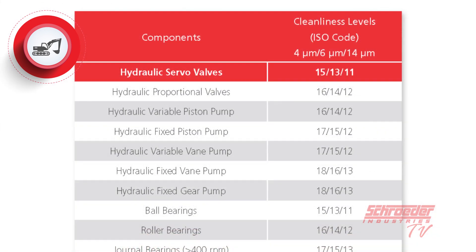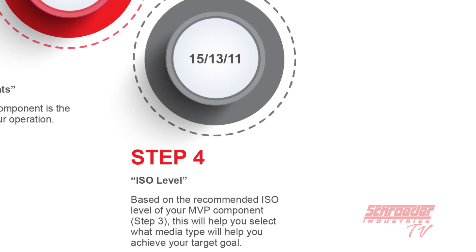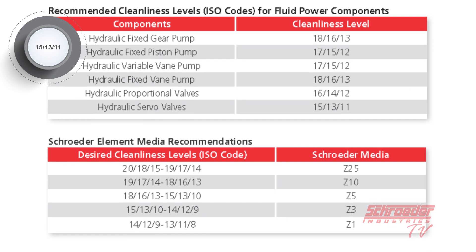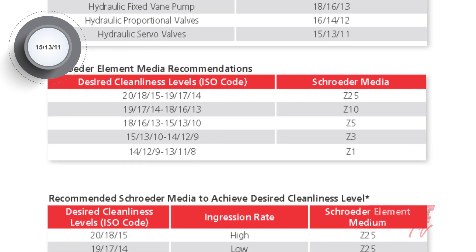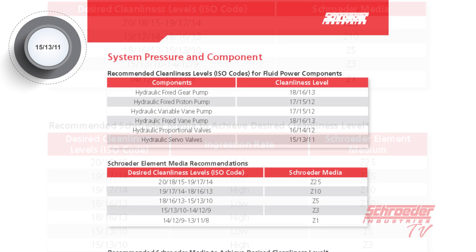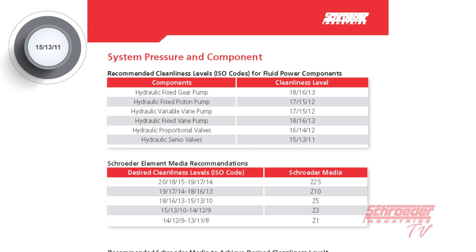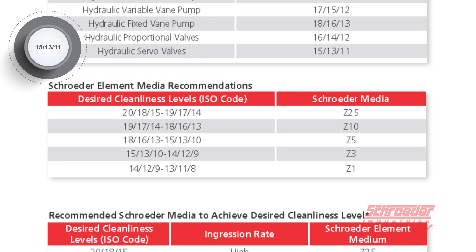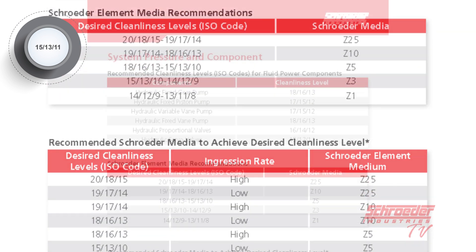The component OEMs will also list ISO code cleanliness recommendations in their own product catalogs if you are looking for a more precise code for your system. Step four is to use the ISO code you found in step three and match it to a micron rating. Each ISO code has a specific micron-rated filter element you should use to best capture and retain the size of contamination most prevalent in your system. Using this chart will guide you to choose the correct micron rating. If you're between ratings, remember you can always go to the lower ISO code.